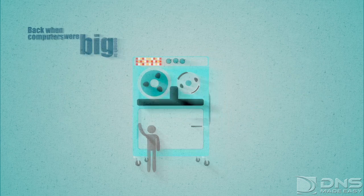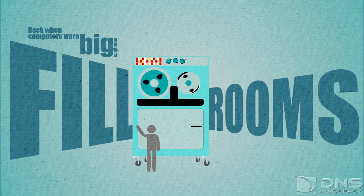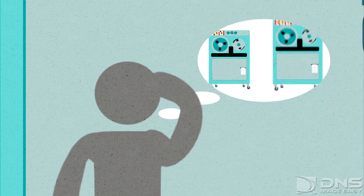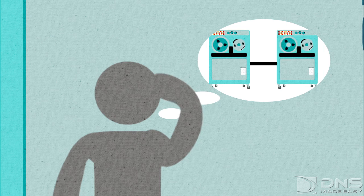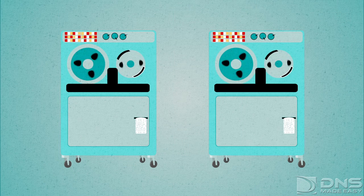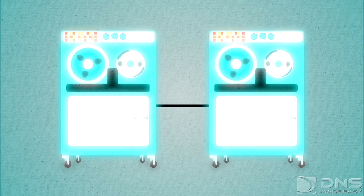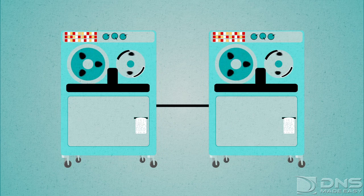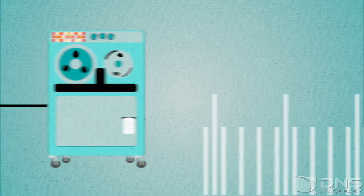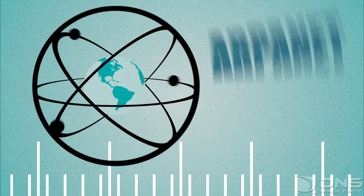Back when computers were big enough to fill rooms and accepted input from punch cards, the idea of connecting two of them together was a fantastical pipe dream. Then, in 1957, two computers would speak to each other for the first time. Moving forward, this method of networking computers would be expanded to a global scale with the use of DARPA's ARPANet.